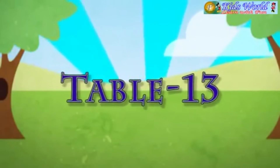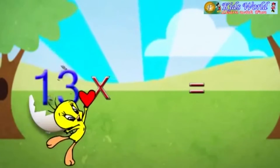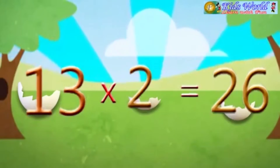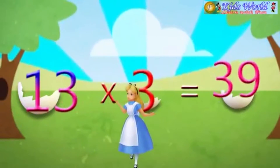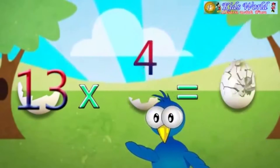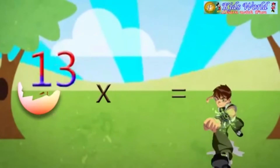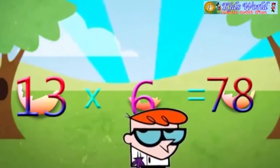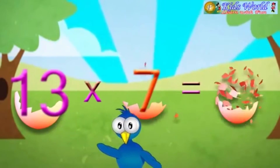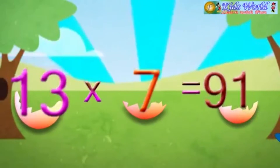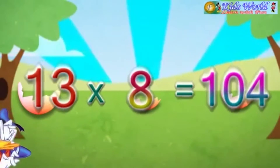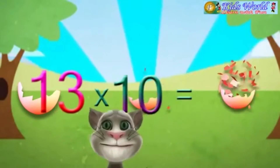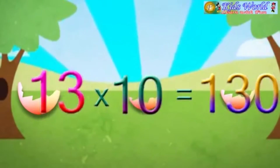Table 13. 13 into 1 is equal to 13. 13 into 4 is equal to 52. 13 into 5 is equal to 65. 13 into 6 is equal to 78. 13 into 7 is equal to 91. 13 into 8 is equal to 104. 13 into 9 is equal to 117. 13 into 10 is equal to 130.